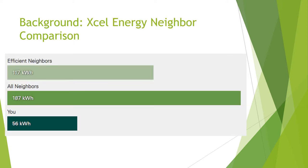Xcel Energy provides the ability to see how your usage compares to your neighbors. As seen in the figure, my energy usage is significantly lower than both my efficient neighbors and all my neighbors. However, I believe this may be skewed considering I live alone. By multiplying my personal energy usage by 2, I end up at 112 kWh, which is closer to the efficient neighbors. This provides promise that I am using a significantly lower amount of energy in comparison to the average person.